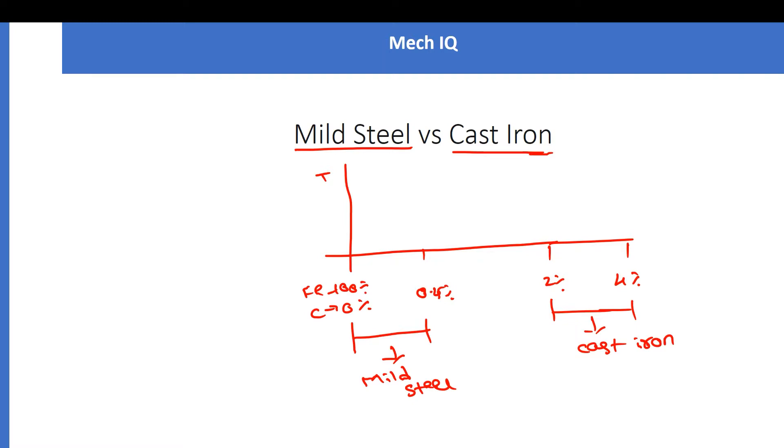Let's see the notable changes. Because of the less carbon content in mild steels, mild steels are more ductile. Coming to cast iron, because of the excessive amount of carbon, those are brittle.